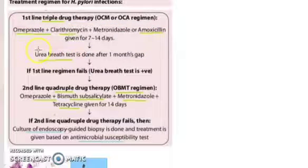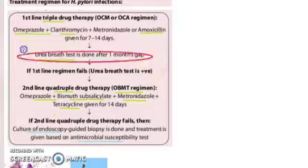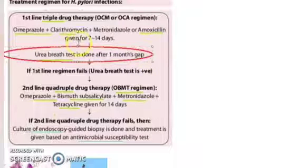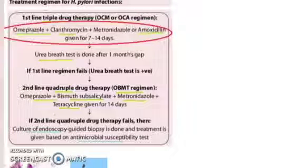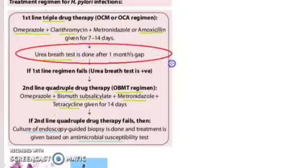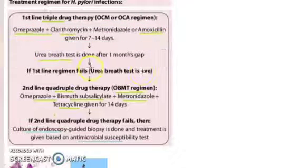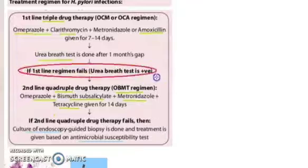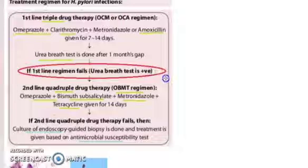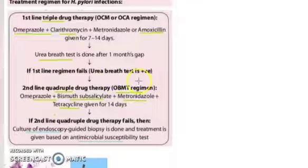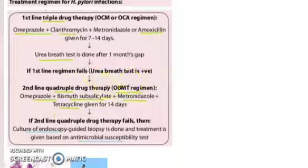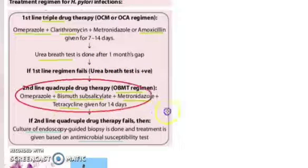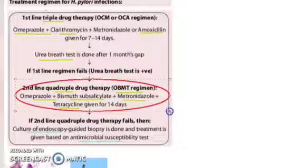Then you will check the urea breath test. After one month, you will check the urea breath test. If the triple drug therapy has failed — meaning the urea breath test is still positive — you will go for quadruple drug therapy.